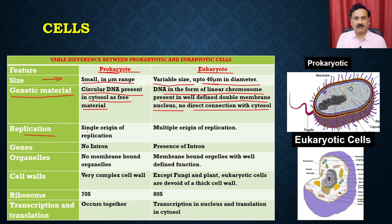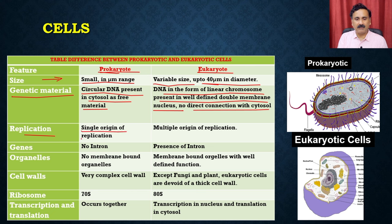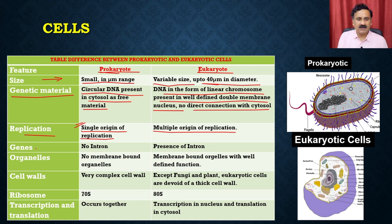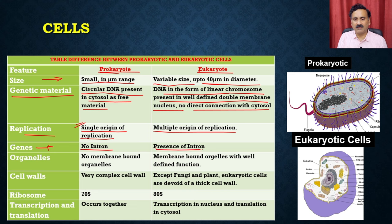As for replication, replication means how you are going to make another copy of your genome. Replication is done by a single origin of replication in prokaryotes, whereas in eukaryotes there are multiple origins of replication. As far as genes are concerned, genes are the functional part of the genome responsible for the production of different types of proteins. There is no intron present in prokaryotes, whereas introns are present in eukaryotes. These terminologies will be clear when we discuss replication, transcription, and translation in subsequent modules.